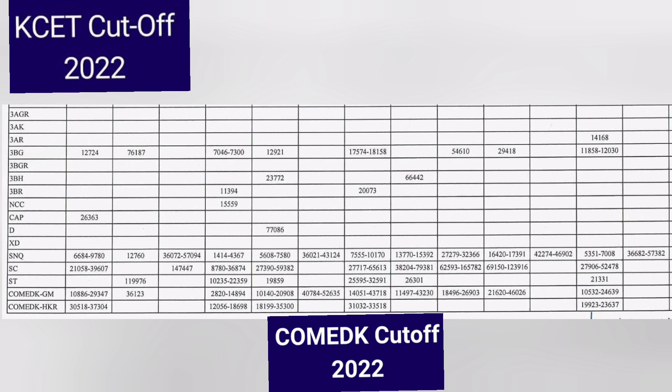Under COMEDK, Information Science closed at around 24,360, so up to 24,000 rank you can get ISE in the last round. If you can wait for the last rounds of KCET and COMEDK, your chances of getting a good seat are very good.